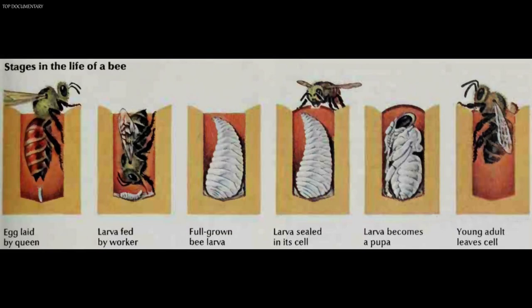Bees develop from eggs laid by the queen. During mating, the drone places semen inside the queen's body. The semen contains sperm, the male sex cells. The queen stores the sperm in a sack in her abdomen. If the queen releases sperm onto an egg, the egg hatches into a worker. If she does not release sperm, it develops into a drone. Honey bee eggs are pearly white and about as big as the head of a pin. A bee starts to develop as soon as the queen lays the egg. After three days, a tiny worm-like larva crawls out of the egg. The workers place larval food called royal jelly in the bottom of each cell in the brood nest.